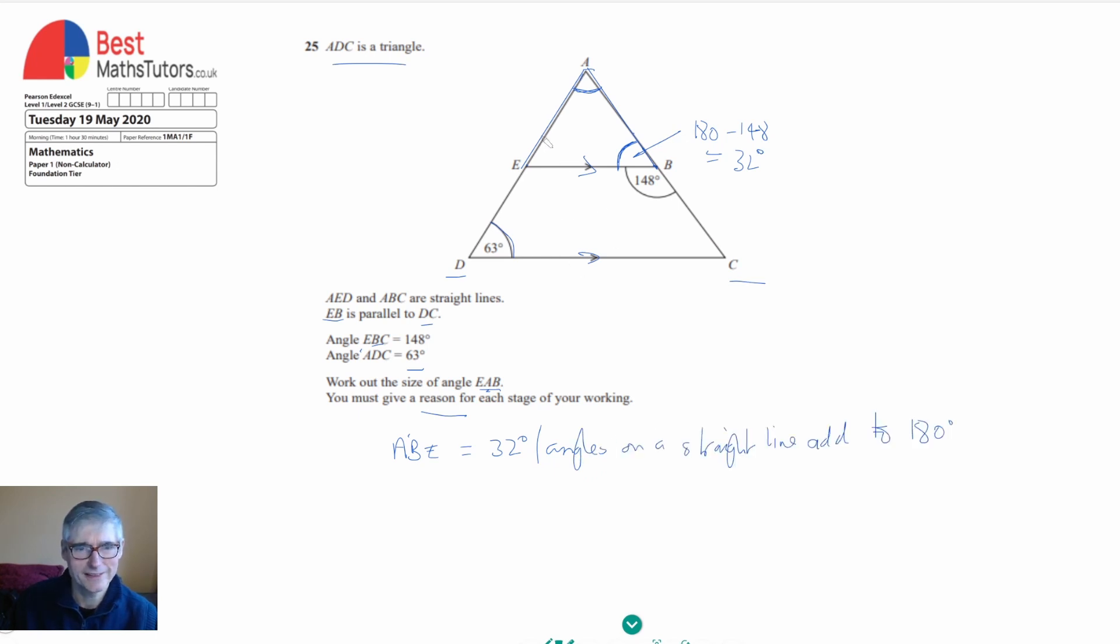The next angle that I'm going to find is this one here and I'll have two of the angles in this triangle ABE. To find this one, it's actually going to be the same as the one in the bottom left corner here, so it's going to be 63. The reason is we've got two parallel lines and we have a line that crosses them, and the angle here is the same as the angle here.